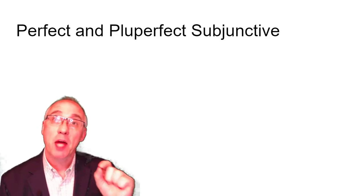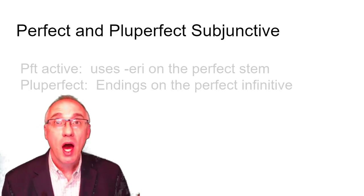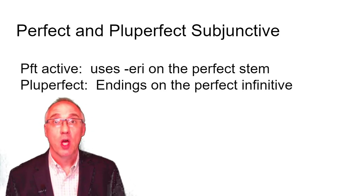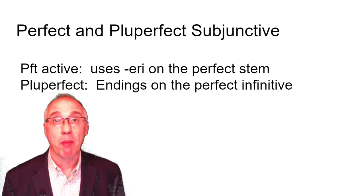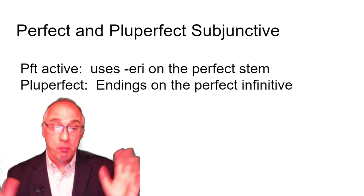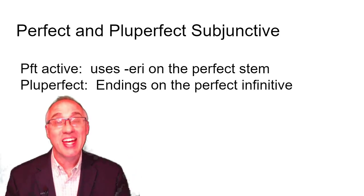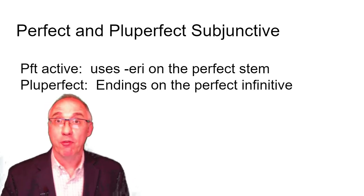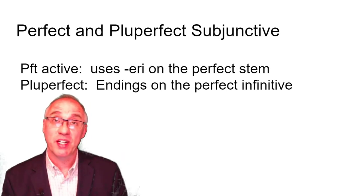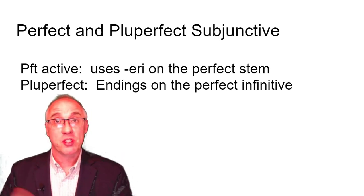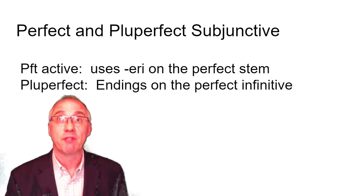The perfect and pluperfect subjunctive are fairly regular. For example, the perfect active uses eri on the perfect stem. The pluperfect puts endings right on the perfect infinitive. If we remember, the imperfect put endings on the present infinitive. The pluperfect puts endings on the perfect infinitive.